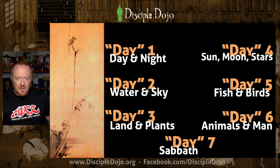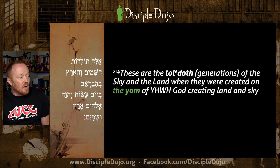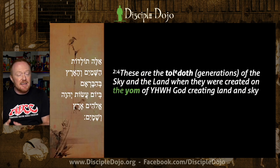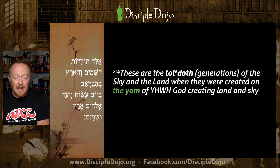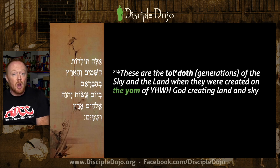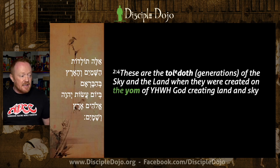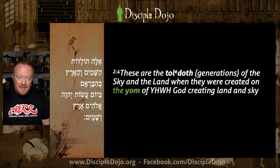Look at what comes right after this in chapter two, verse four — this is the hinge. Some argue this verse is the end of the Genesis one account; others argue chapter two, verse four is the beginning of the next section in Genesis. There's debate among Genesis scholars. If you read the commentaries, they don't agree on whether two-four should be a new paragraph or the end of the previous section. I take a mediating approach — I think it serves as a hinge.